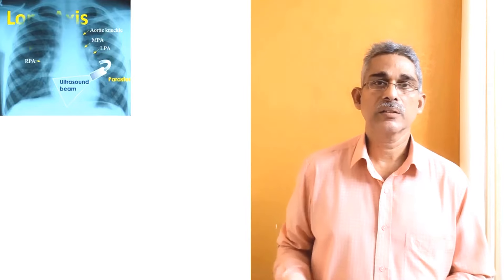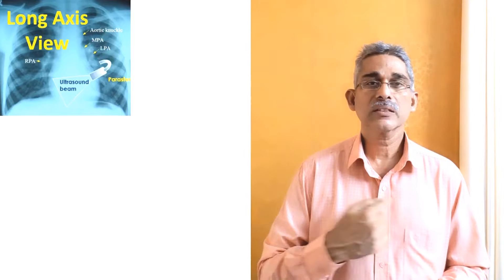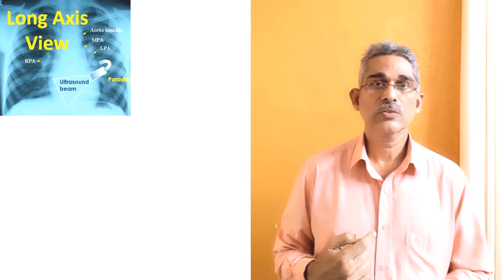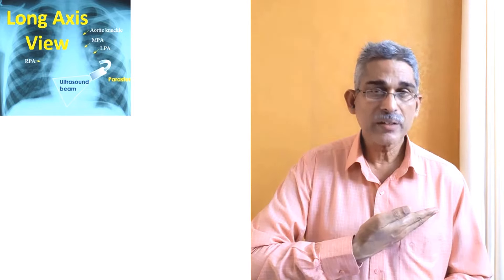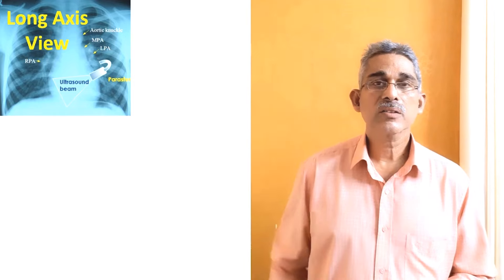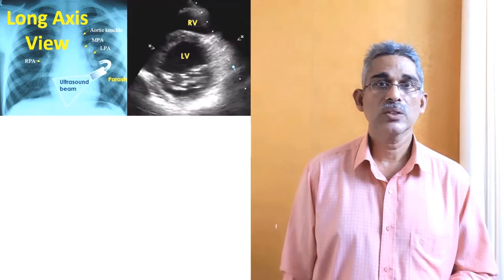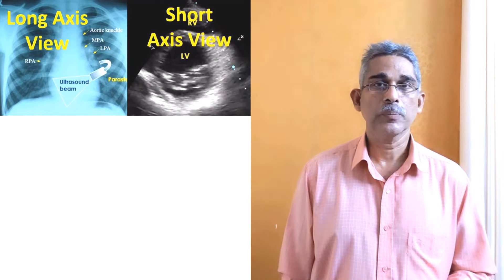You can image the heart along its long axis from the base to apex, or perpendicular to it. Imaging along the long axis is called the parasternal long axis view. If you are imaging perpendicular to it, it is called the parasternal short axis view. These are the first two views usually obtained.